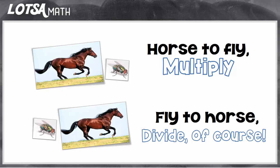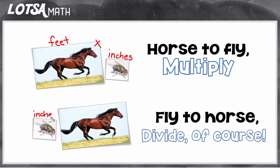So if you're using feet and inches, feet is going to be the bigger unit and inches is going to be the smaller unit. So if you're going from feet to inches, you're going from horse to fly, and you would have to multiply. If you're going from smaller to larger — say you know how many inches it is and you're converting it into feet — you're going from fly to horse, and then you'll divide, of course.